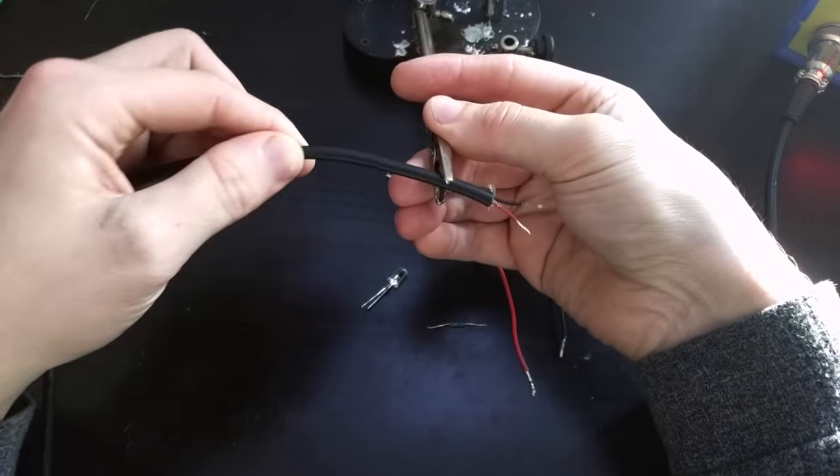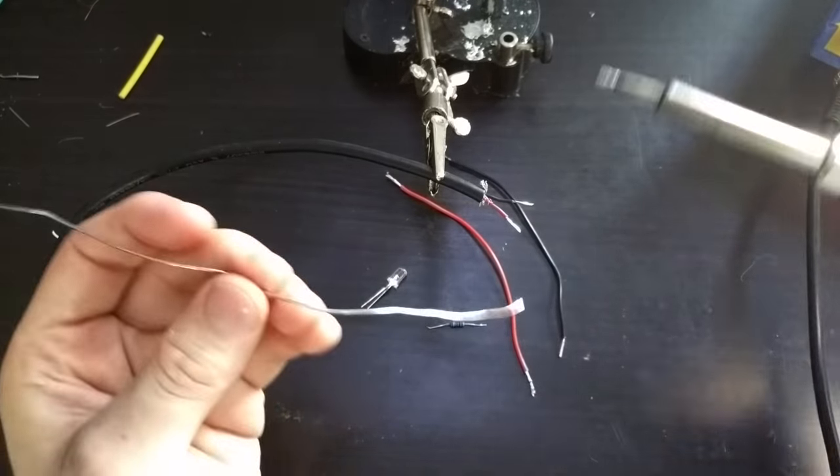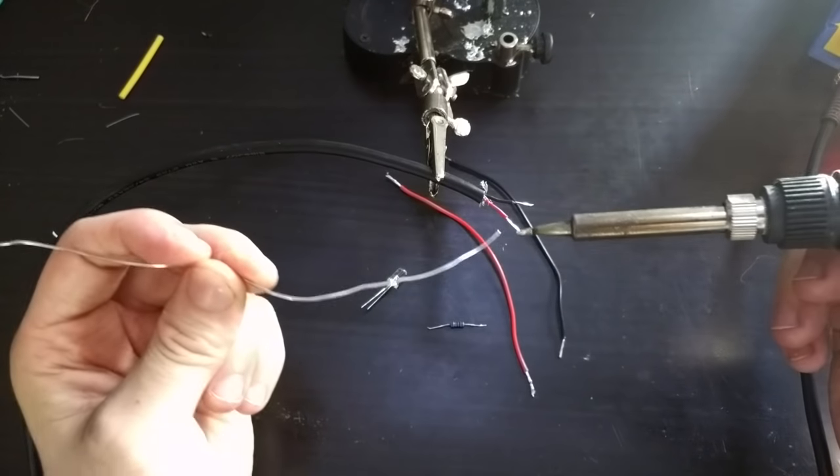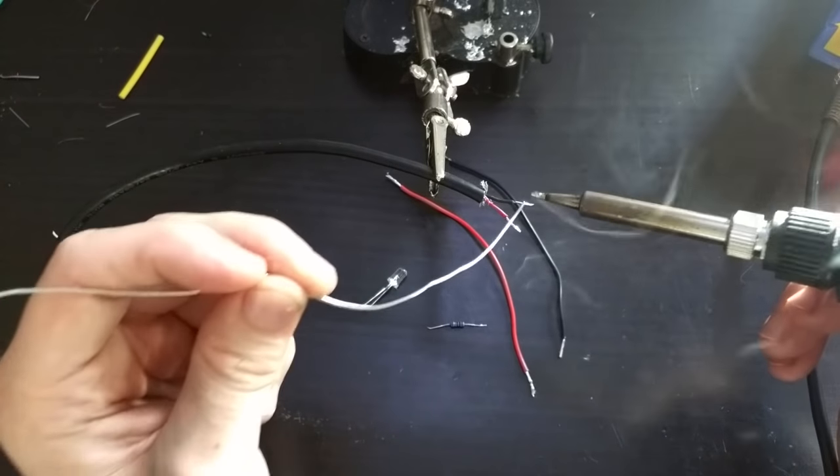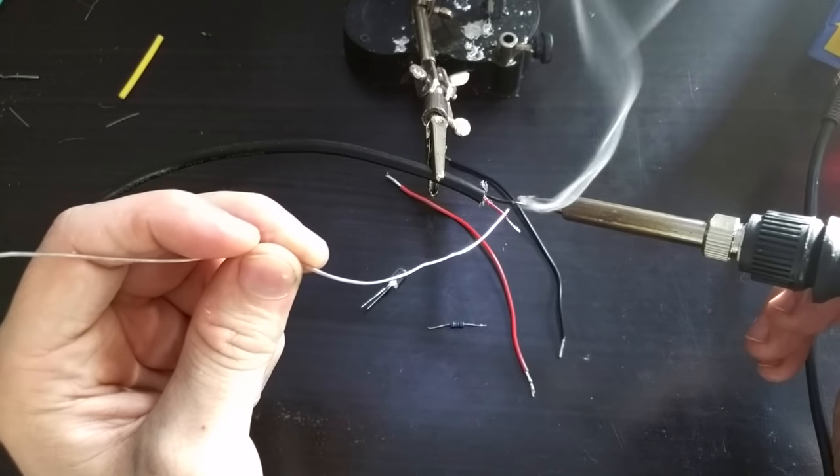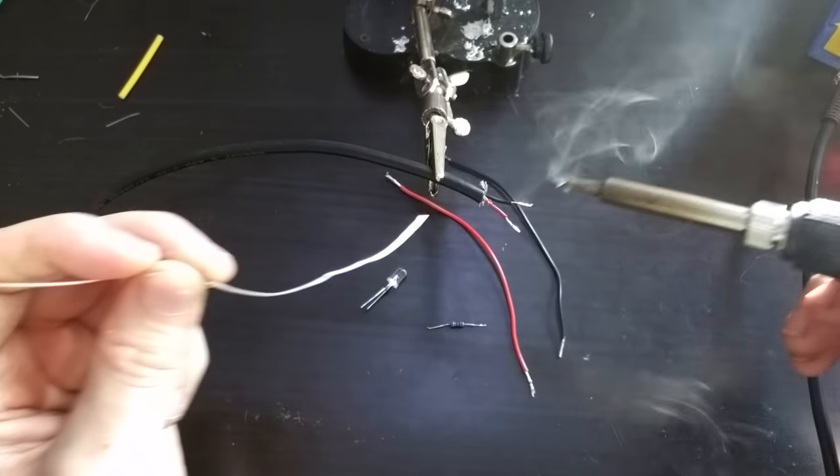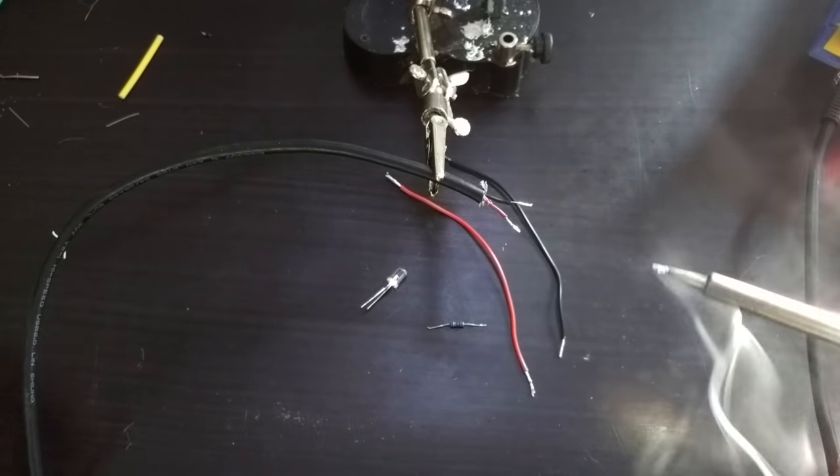We're going to begin soldering. I've got my soldering iron and solder. I'm going to tin these wires. Tinning the wires means I'm just applying a coating of solder to prepare the contacts for a good solder connection.